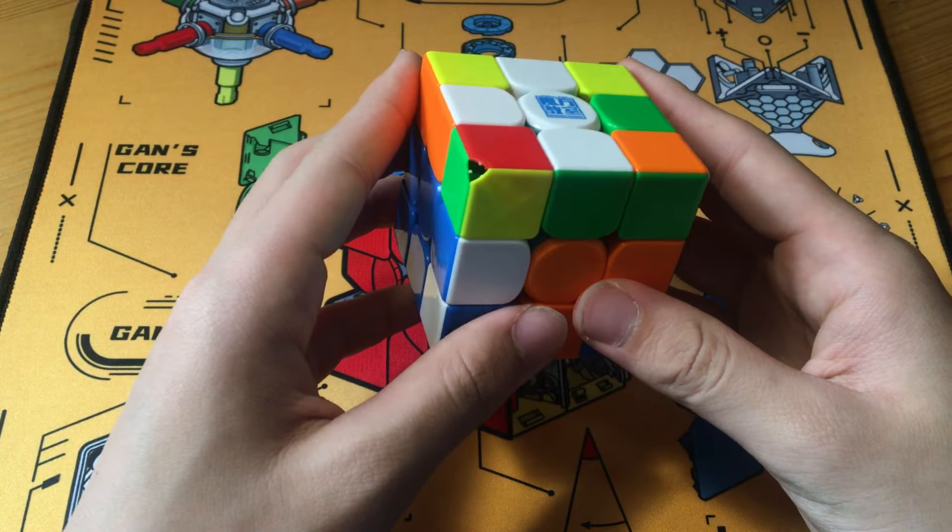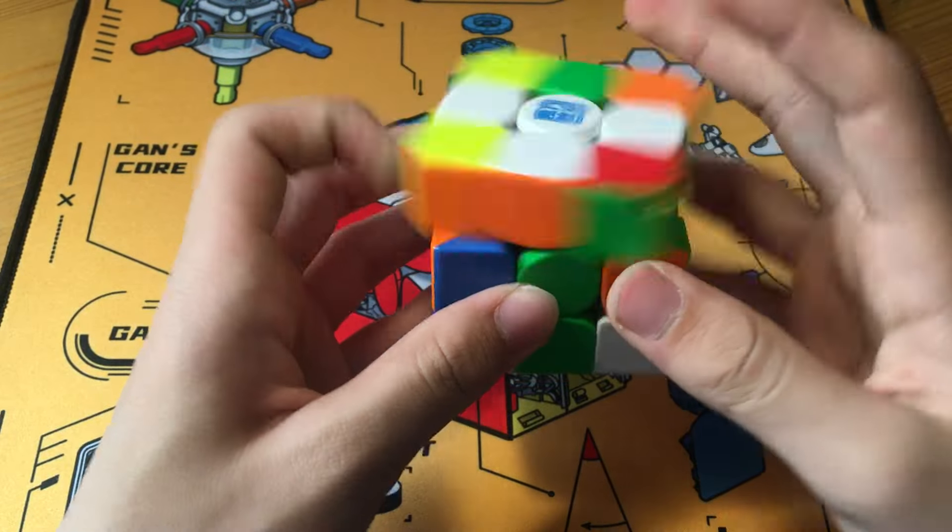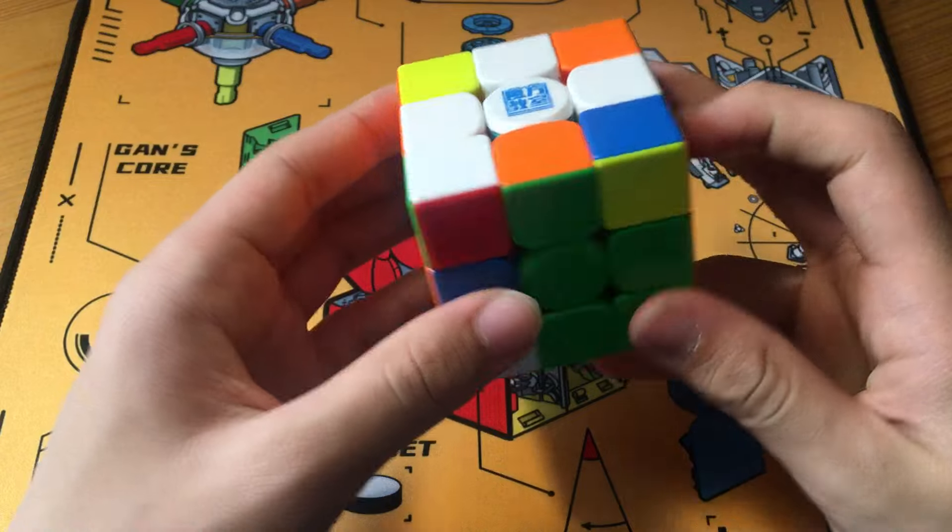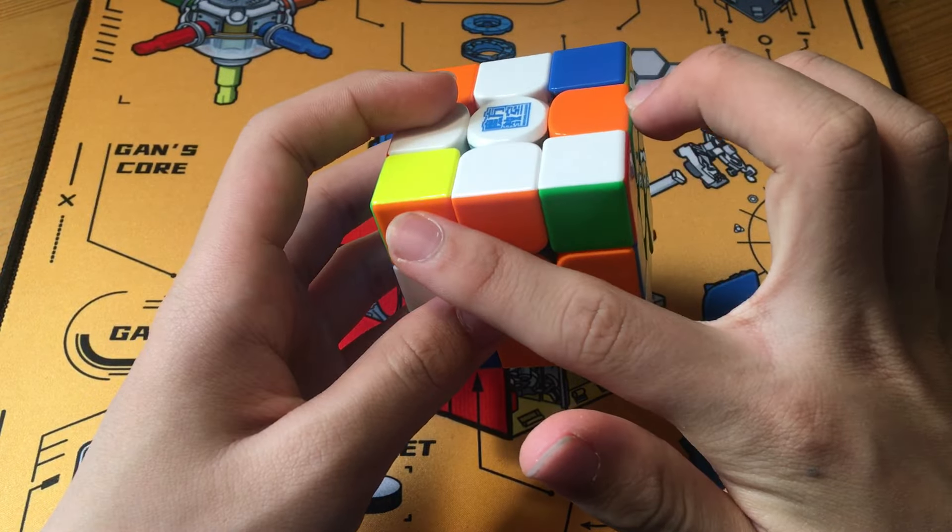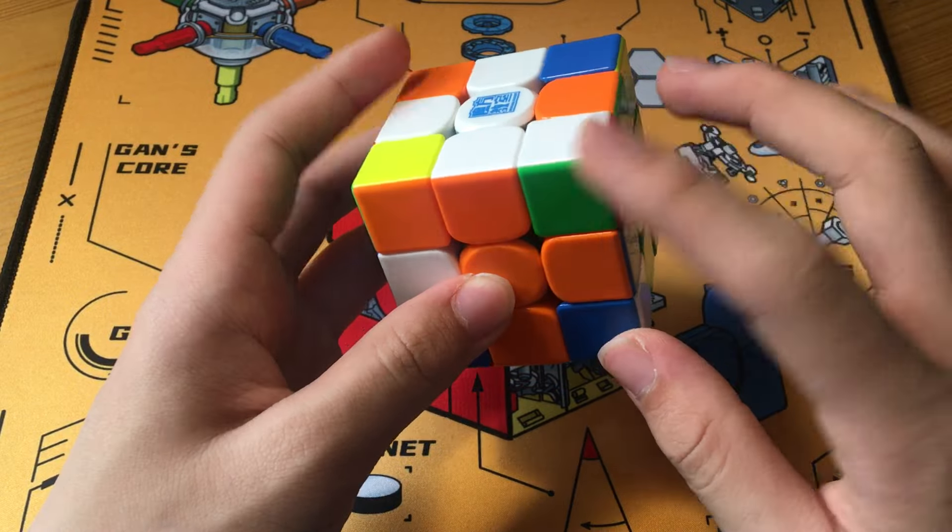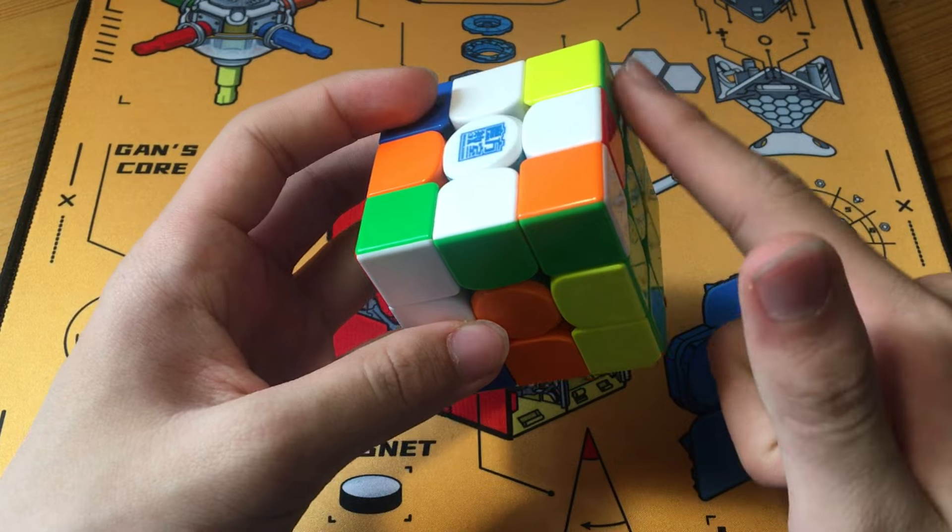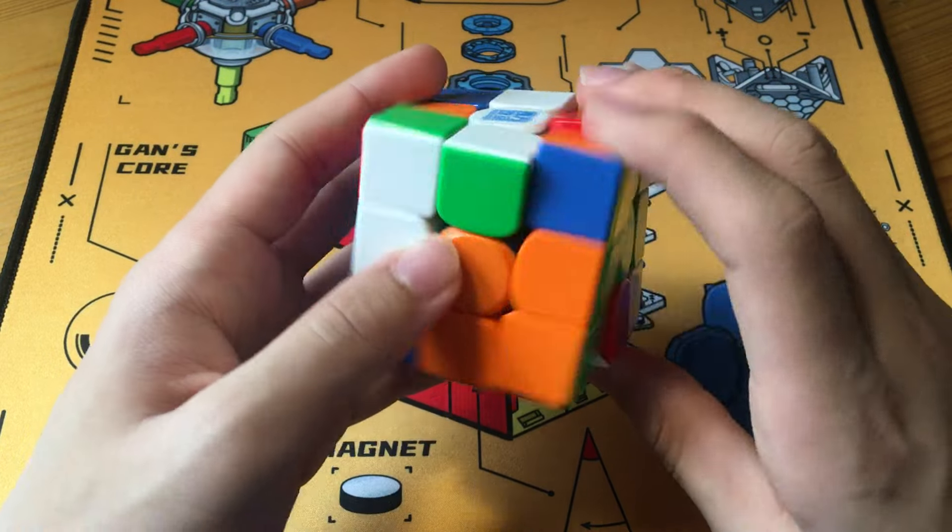cross plus one. And then the second pair is also a free pair right here. So he just rotates and does these two. And now here, he has this pair and he has this pair. And he does a very cool technique here, where basically he cancels, sorry,